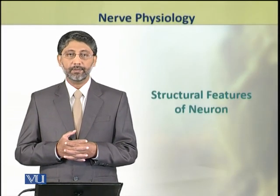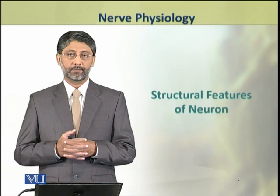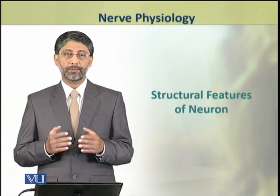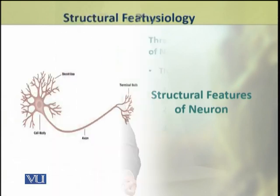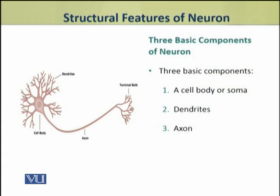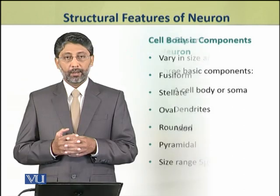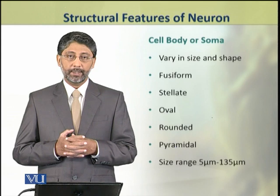Dear students, in this module we shall discuss the structural features of a neuron. A neuron has three basic components: the first is a cell body, which is also known as soma; the second component is the dendrites; and the third component of a neuron is the axon. We shall discuss these parts in detail.